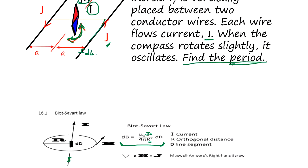The distance is A, so R squared equals A squared plus L squared. dB is going to be mu zero J over 4 pi r squared dL. We take the integral to get B.